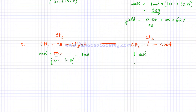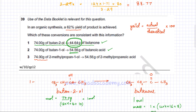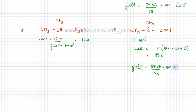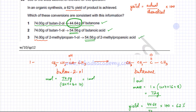The theoretical mass of 2-methylpropanoic acid = 1 mole × molar mass = (12×4 + 2 oxygens×16 + 8 hydrogens) = 48 + 32 + 8 = 88 grams. The actual output given in the question is 54.56 grams. Yield = 54.56 ÷ 88 × 100, which also comes out to exactly 62%.